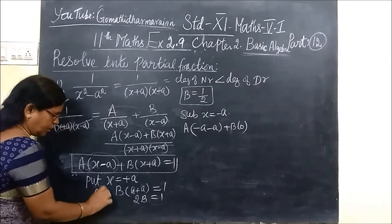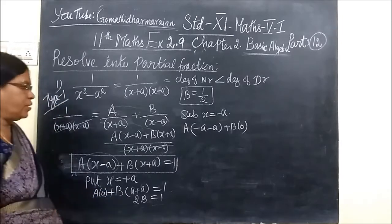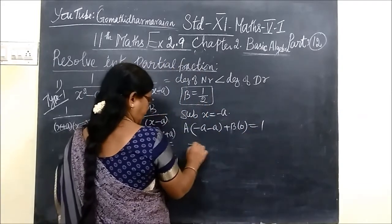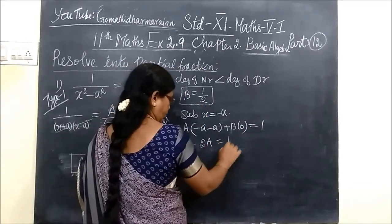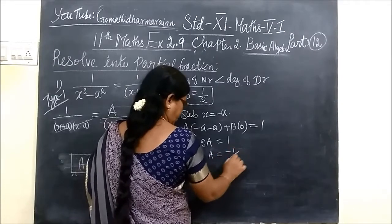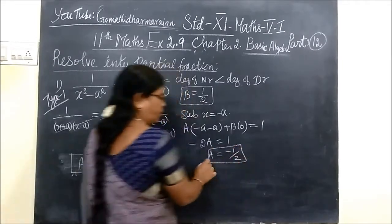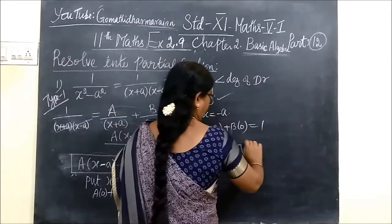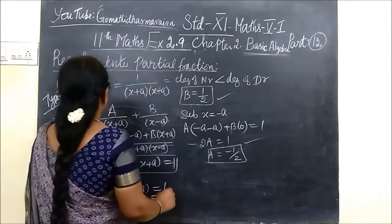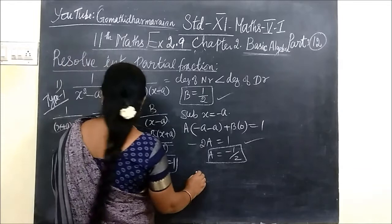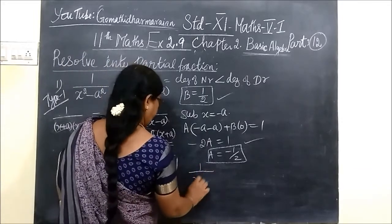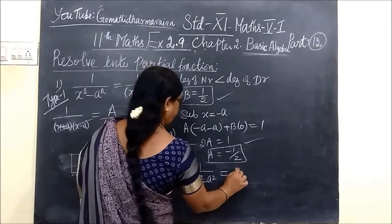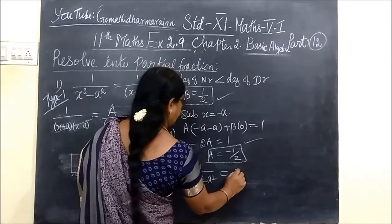So this is equal to 1. So minus 2A equal to 1. So A equal to minus 1 by 2. So the two constants will be found. Now we write the final step: 1 by x squared minus a squared equals A by S plus A plus B by S minus A.